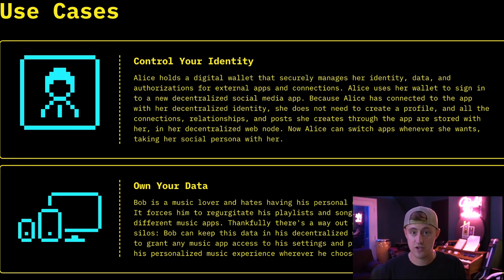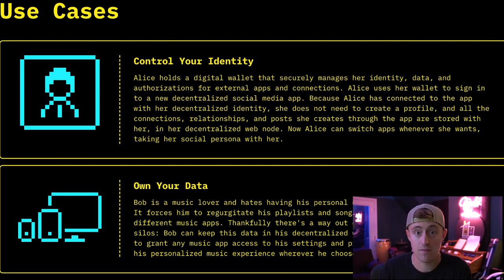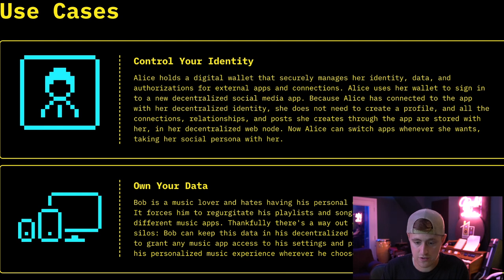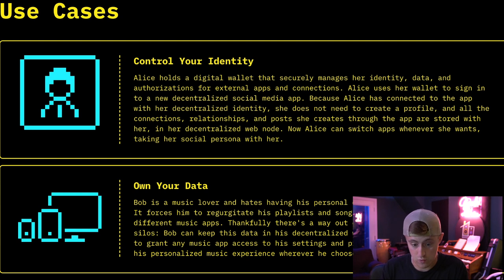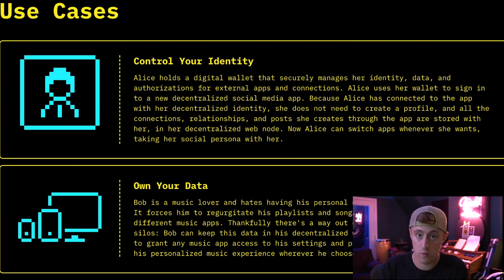We're jumping back over to the website because Jack and his team included something called use cases — basically hypothetical testimonials of what Web 5 can do. One of them is called 'Control Your Identity.' It says Alice holds a digital wallet that securely manages her identity, data, and authorizations for external apps and connections. Alice uses her wallet to sign in to a new decentralized social media app. Because Alice connected with her decentralized identity, she doesn't need to create a profile — all connections, relationships, and posts she creates are stored with her in her decentralized Web node. Now Alice can switch apps whenever she wants, taking her social persona with her. That piece is super exciting — basically, across all decentralized social medias, you can have that one presence.